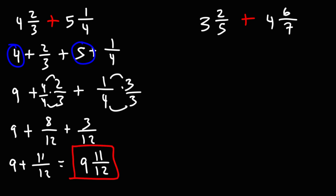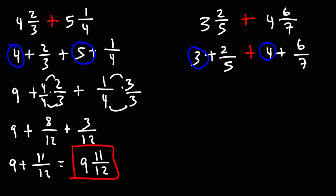Let's do the same for the second example. So 3 and 2 fifths is 3 plus 2 over 5. And 4 and 6 sevenths is 4 plus 6 over 7. So let's add the whole numbers, 3 plus 4, which is 7.